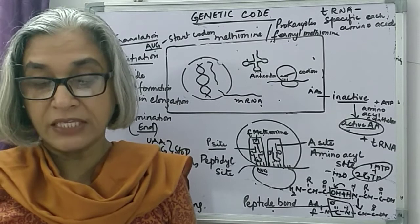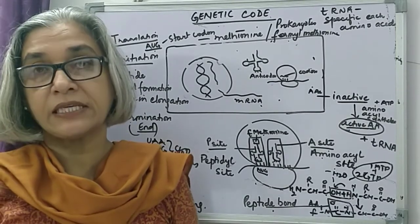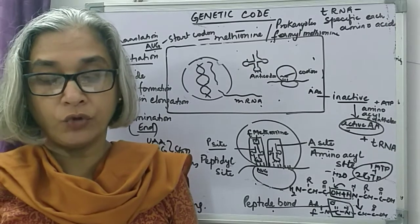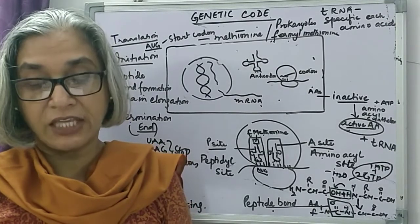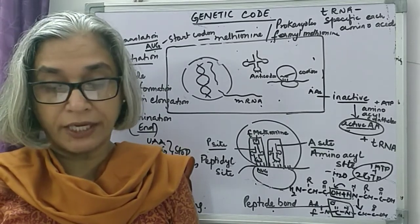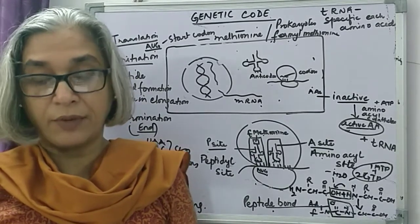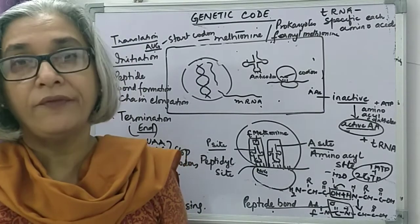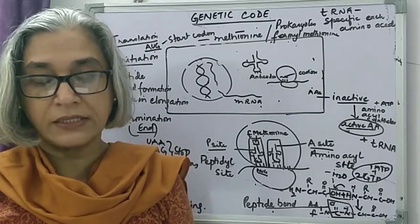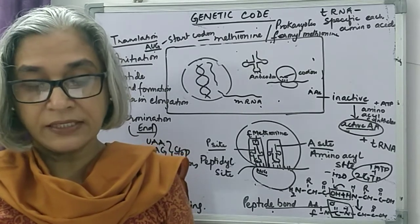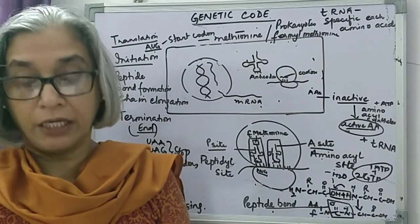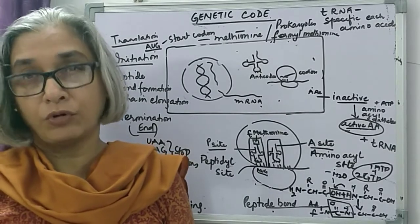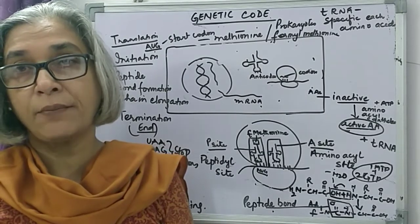Translation takes place in the cell cytoplasm. Various amino acids get arranged by means of peptide bonds in sequential manner according to the information provided by the messenger RNA, and they form the polypeptide chain. This process takes place in ribosomes, and therefore ribosomes are called protein factories of the cell. There are 20 different types of amino acids, but they can be joined together in a number of ways to give rise to millions of proteins.